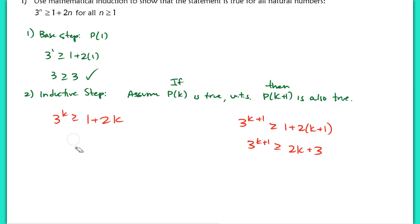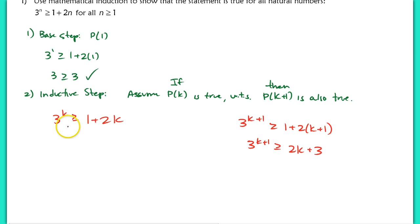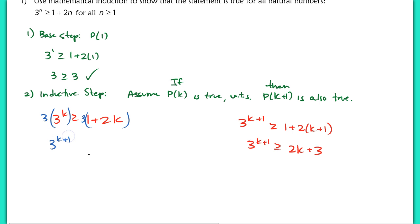Whenever you're dealing with exponents, the easier thing to do is to always try to manipulate the side with the exponents to make them match. So start on the left-hand side. Some people might want to add 2 to the right-hand side to get 2k+3 to match up, but it becomes quite tricky on the left-hand side. So we're going to multiply by 3 — in another color so you can see what I'm doing. Multiplying both sides by 3 gives 3 to the k+1 is greater than or equal to 3 plus 6k. Now the left-hand side here matches, so I'm halfway there.